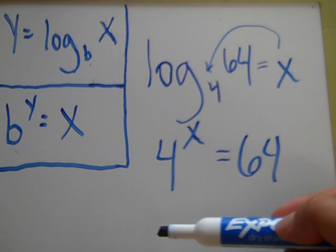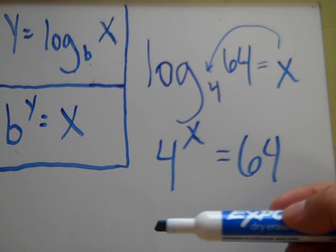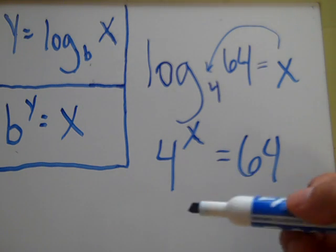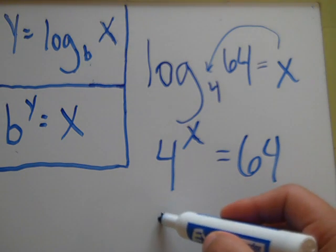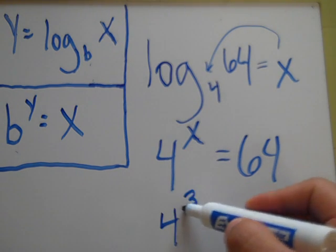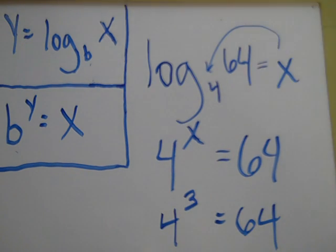Now, what is x? You can basically just plug it into your calculator and try a couple numbers, and you'll discover, you know, after just one or two, that 4 to the 3rd power is equal to 64.